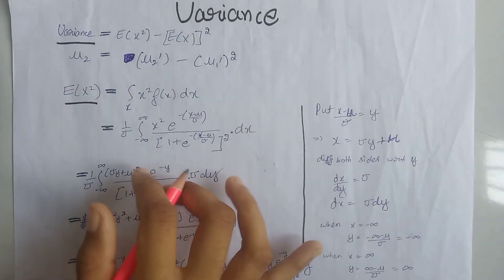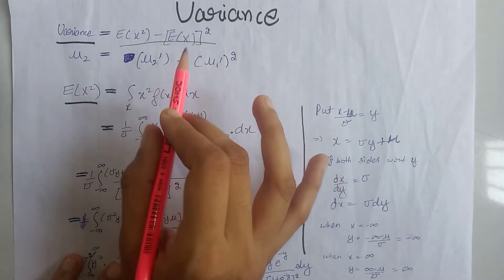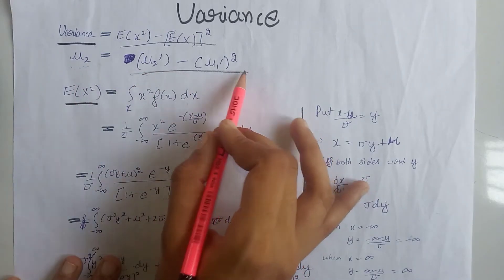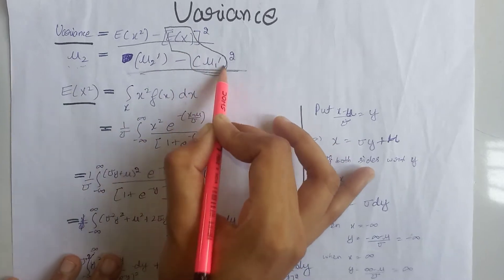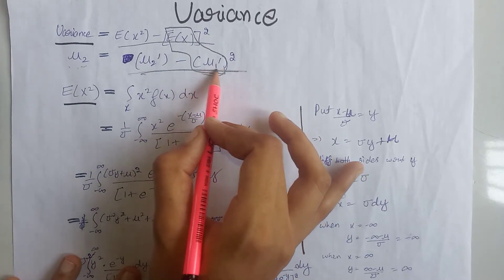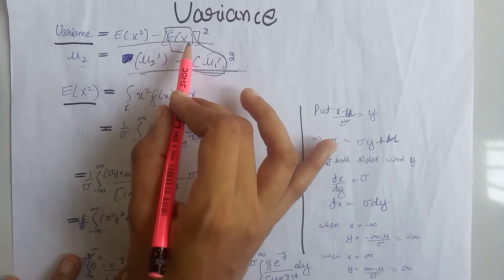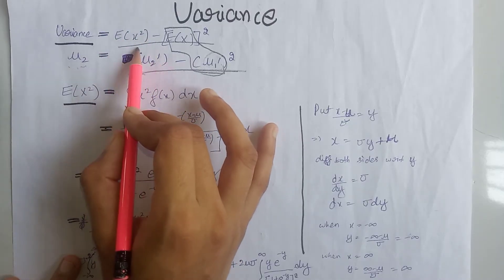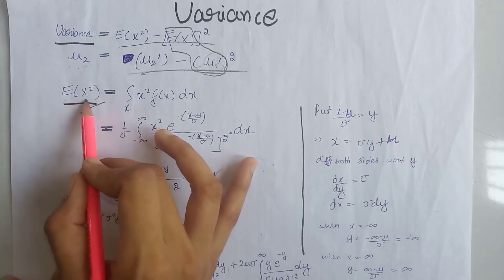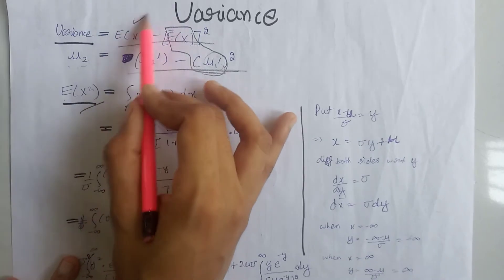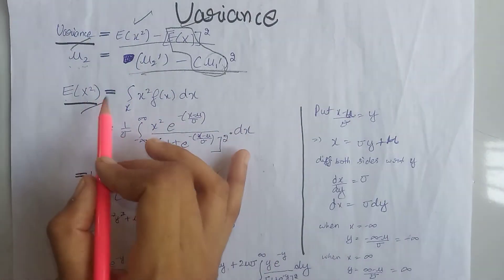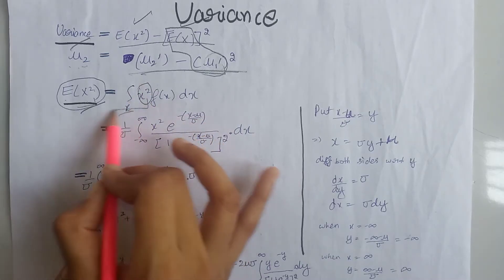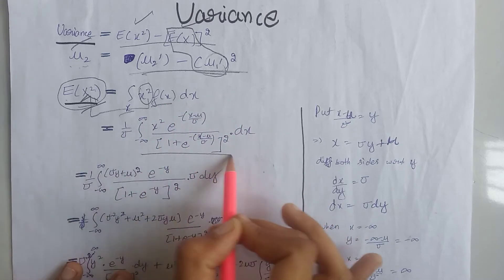Now we will calculate the variance of the logistic distribution, which in terms of expectations is E[X²] minus (E[X])², and in terms of moments is mu₂, the second moment about the mean. We know the mean equals mu. We just need to calculate the second moment about the origin, that is E[X²]. According to the definition of expectation, we write the integration over all values of x, the term x² inside the expectation, and the PDF of the logistic distribution. Since 1 divided by sigma is a constant, we write it outside the integration.